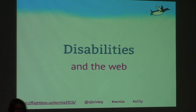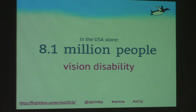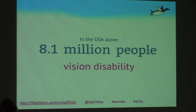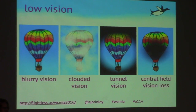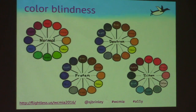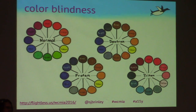Now we're going to specifically talk about how disabilities affect the way people use the internet. The first is visual disability: 8.1 million people in the U.S. are visually disabled; 100,000 of those are blind. Most of the rest have some sort of low vision — blurry vision, clouded vision, tunnel vision, or central field vision loss.